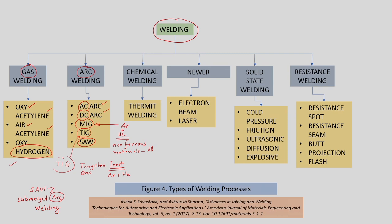When we use chemical energy — heat generated due to a chemical reaction — that is called chemical welding. A very popular and useful chemical welding process is thermite welding, which is popularly used for joining the rails used for locomotives and trains.